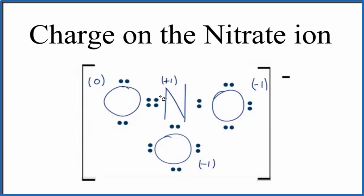So if you add up all of the formal charges, negative 1, negative 1, positive 1, you end up with this 1- ionic charge for the nitrate ion. So that's another way to figure this out.